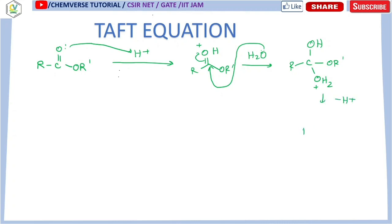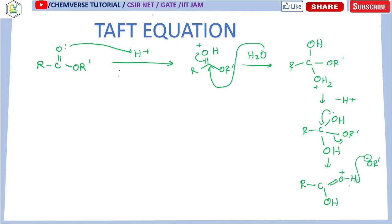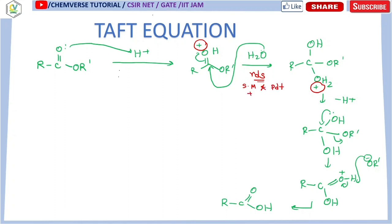From here H⁺ is removed, giving OH, OR', and OH. The OR'⁻ is a good leaving group, so you get the acylium-type intermediate with OH, and OR'⁻ grabs H⁺, giving carboxylic acid. This is acid-catalyzed hydrolysis, and this step is the rate-determining step. In the rate-determining step, a positive charge is present in both the starting material and the product, so there is effectively no significant change in electron density.